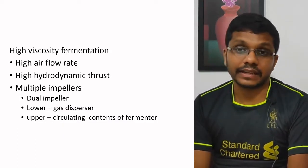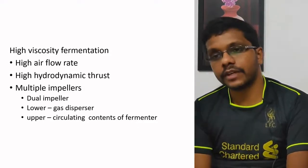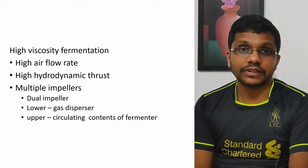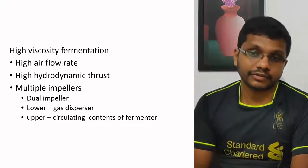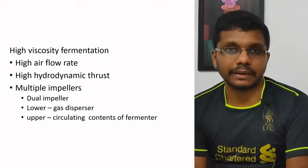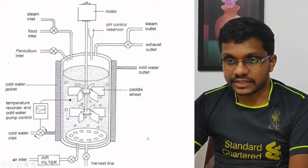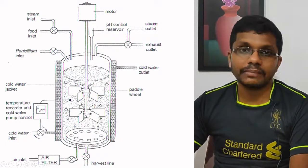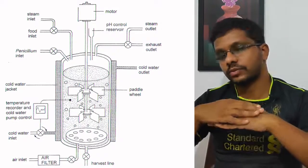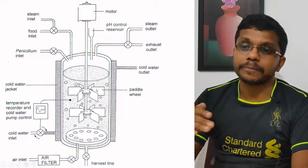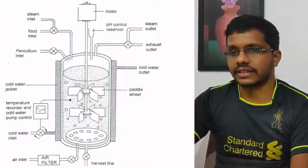One problem with impellers is that fermentation media can have very high viscosity, especially when culturing mycelial fungal cells. In such cases, high air flow rates are required due to growth rate demands, and high hydrodynamic stress is present. This can be addressed by using multiple impellers. One common method for high-viscosity fermentation is using dual impellers — a lower impeller specialized in gas dispersion and an upper impeller specialized in bulk mixing. Depending on fermenter size, three or four impellers can also be used.